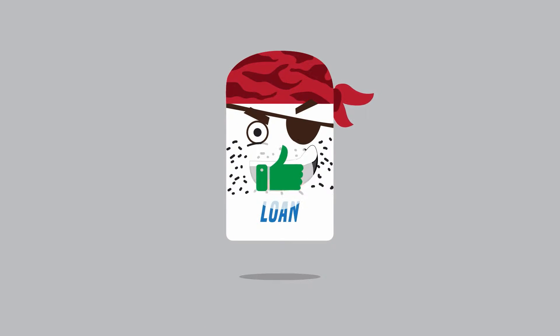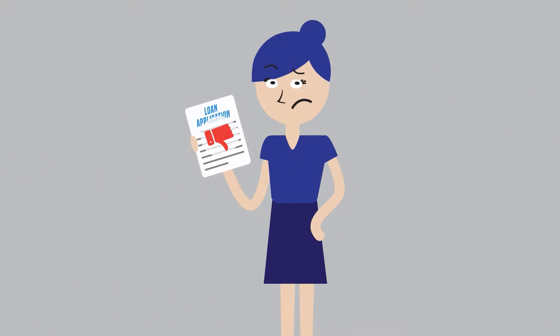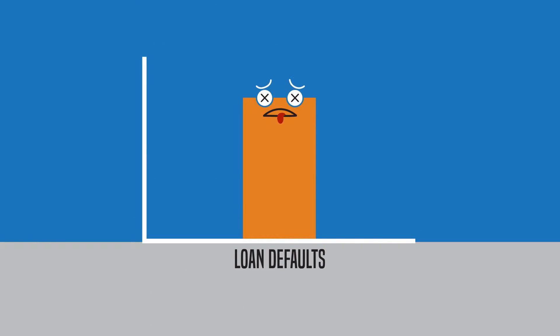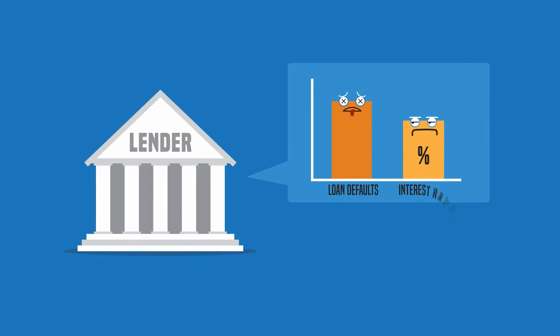You see, too many bad loans are getting made, and too many good borrowers are getting turned down. That means more people defaulting on their loans than they should, and the only way lenders have been able to keep up is by raising interest rates.